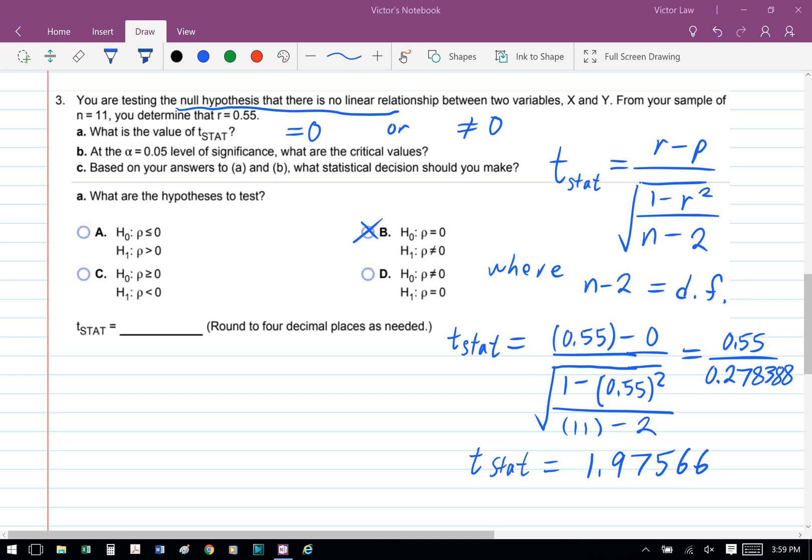So we have 0.55 minus 0, divided by square root 1 minus 0.55 squared, divided by 11 minus 2. So we have 0.55 divided by 0.278388. So our t statistic equals 1.97566.